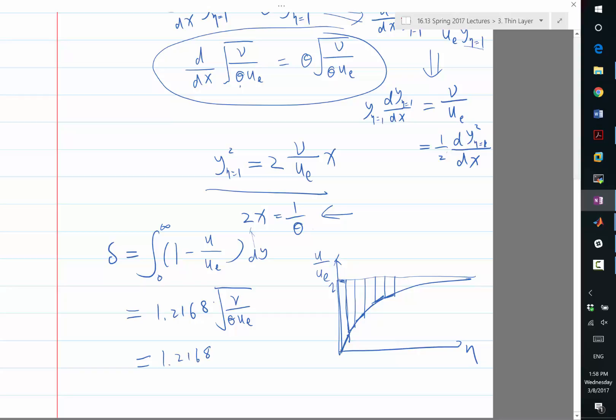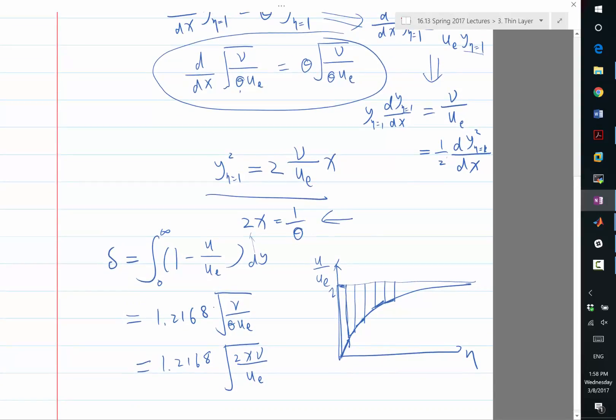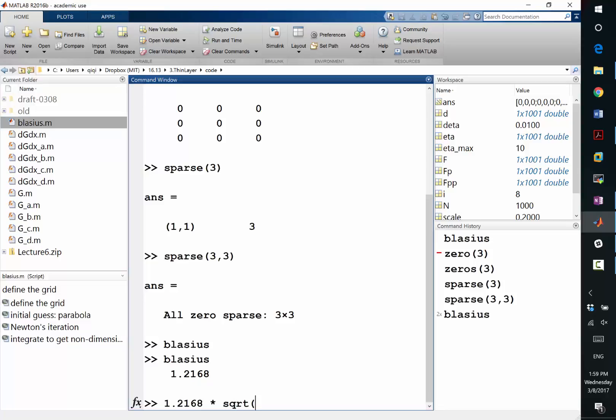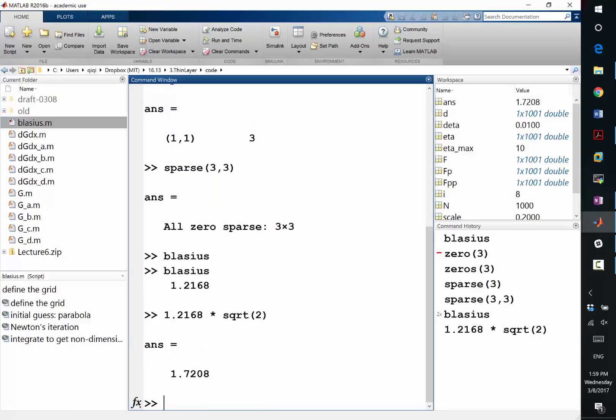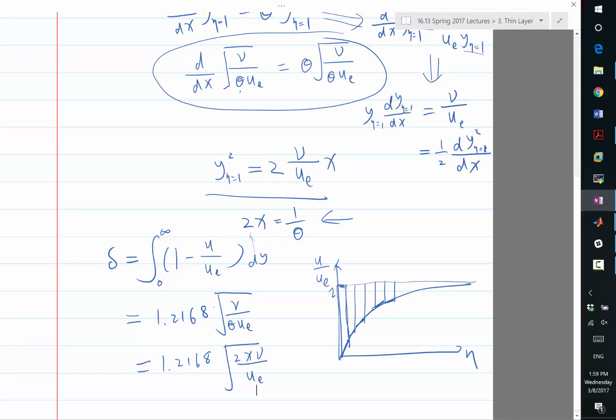So instead of 1 over theta, I have 2x nu ue. And if you factor this square root of 2, I think this is usually 1.72. 1.2 is usually the number you see in literature when you read about the Blasius boundary layer.